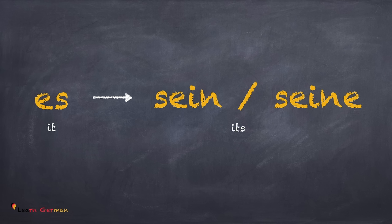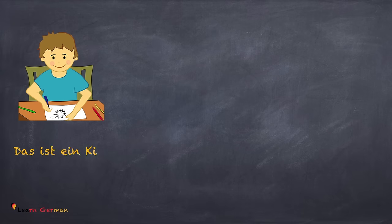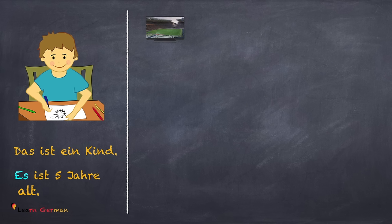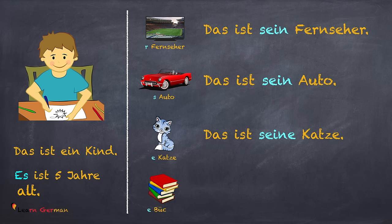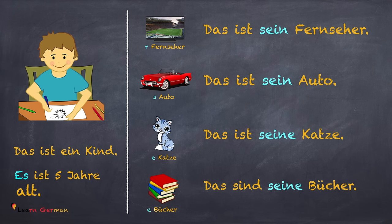Coming to the next pronoun: 'es.' The possessive Pronomen are the same as that of 'er,' that is 'sein' or 'seine.' Das ist ein Kind. Es ist fünf Jahre alt. Das ist sein Fernseher. Das ist sein Auto. Das ist seine Katze. Das sind seine Bücher. When the article is 'der' or 'das,' you say 'sein,' and whenever the article is 'die' in feminine or plural, you say 'seine.'